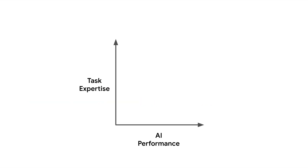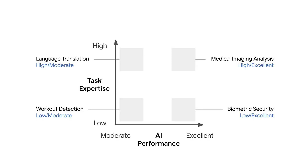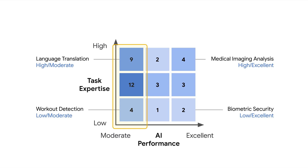With this in mind, we went back to our collection of examples and captured the level of AI performance as well as the level of expertise needed for each task. For example, workout detection can detect and count steps, and it doesn't have to be super accurate to be useful — having some count is better than having no count. Whereas with medical imaging, identifying cancer requires highly specialized expertise and near-perfect performance to be actually useful. Once we mapped all the examples, we realized that more than half used moderate AI performance to create value, with only a few requiring excellent performance to be useful.